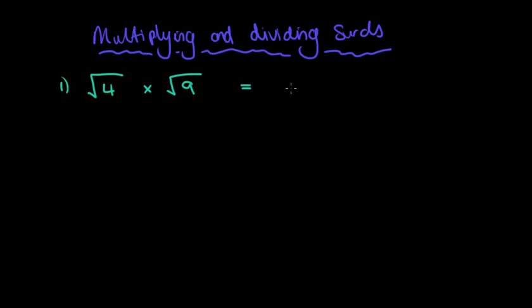Now obviously the square root of 4 would be 2, the square root of 9 would be 3. So 2 times 3 equals 6.